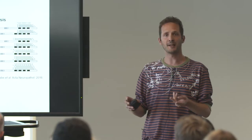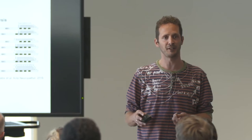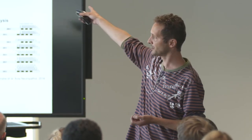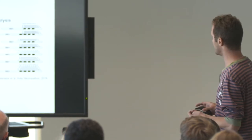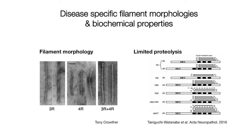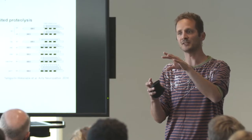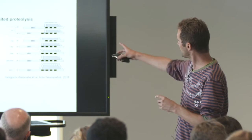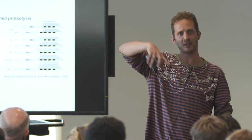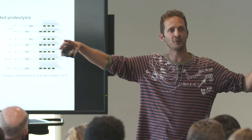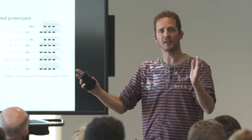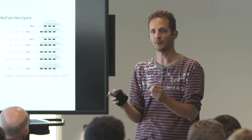Using electron microscopy — work done in the 90s by Tony Crowther and Michel Goedert at the LMB — you can see that morphologically the filaments are actually different in the different diseases. More recent work by a group in Japan found that if you do limited proteolysis, you can treat filaments extracted from brains with proteases and eat away the fuzzy coat surrounding the filaments — the part of tau protein that is not ordered.